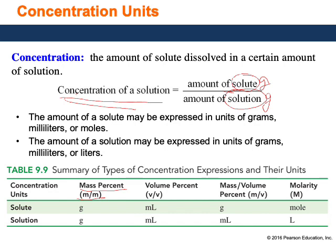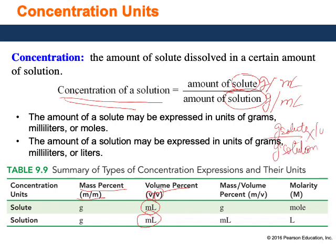Another variation is measuring volume of solute and volume of solution. For instance, if I have mL of solute mixed in a certain mL of solution, this form of concentration is called volume percent, abbreviated as vol/vol. The actual formula is: concentration = (amount of solute / amount of solution) × 100. Since all of these are calculated as percentages, they are called mass percent and volume percent.